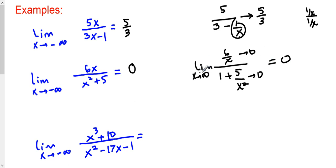What about negative infinity? The same thing applies. 6 over negative infinity still approaches 0 — you get values like negative 0.1, negative 0.01, negative 0.000001 — but nonetheless it's going towards 0. Similarly, 5 over x squared still approaches 0 even if x goes towards negative infinity.